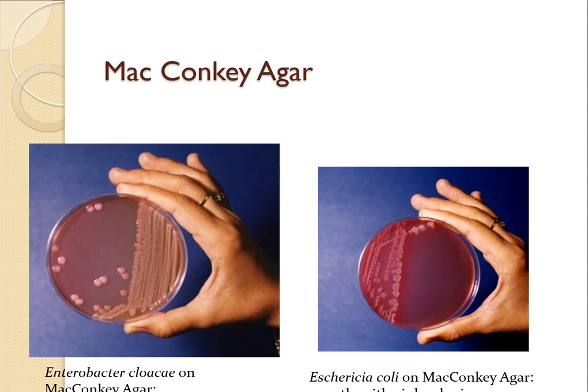As an example, upon inoculation of microorganisms on MacConkey's agar, Enterobacter cloacae shows pink colonies, and E. coli on MacConkey's agar also shows pink colonies. MacConkey's media is selective for gram-negative bacteria because of the presence of bile salts, which prevent the growth of gram-positive bacteria.